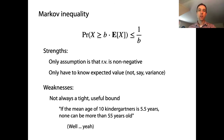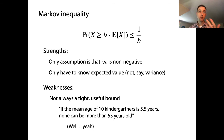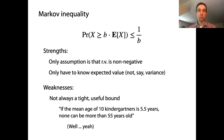There are other concentration bounds that use the variance of a random variable to achieve stronger results — for example, Chebyshev's inequality. But we only need Markov's inequality for our proof about the Count-Min sketch, so this is where we'll stop.